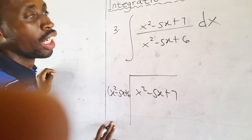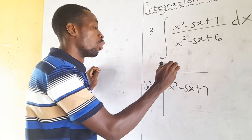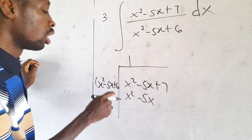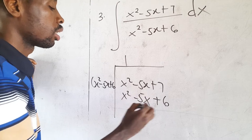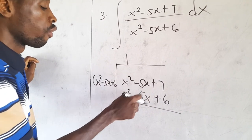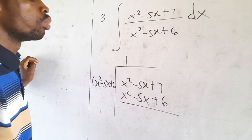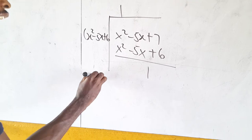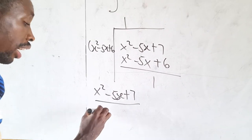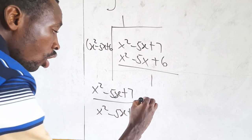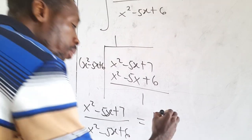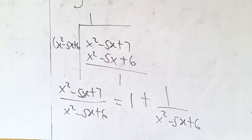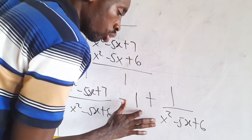Performing the long division: x² − 5x + 6 goes into x² − 5x + 7 once. Multiplying 1 by the divisor gives x² − 5x + 6. Subtracting: x² − x² = 0, −5x − (−5x) = 0, and 7 − 6 = 1. So the quotient is 1 and the remainder is 1. Therefore, (x² − 5x + 7)/(x² − 5x + 6) = 1 + 1/(x² − 5x + 6).